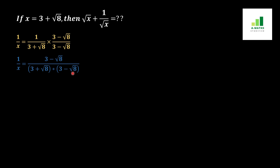We can see that the a squared minus b squared formula is (a plus b) into (a minus b). Here the two expressions in the denominator are the same with different signs, so we can apply the a squared minus b squared formula, where a is 3 and b is under root 8.